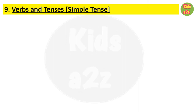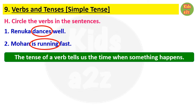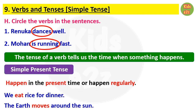The next topic is verbs and tenses. Here they will learn simple tenses: simple present tense, simple past tense, and simple future tense. Verbs are doing words. For question H, kids need to circle 'dances' as the verb, and for the second one the verb is 'is running.' The tense of a verb tells us the time when something happens. Simple present tense tells us about things that happen in the present or happen regularly — like 'We eat rice for dinner.'